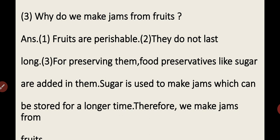Question 3: Why do we make jams from fruits? Fruits are perishable — they do not last long. For preserving them, food preservatives like sugar are added to them. Sugar is used to make jams, which can be stored for a long time. Therefore, we make jams from fruits.